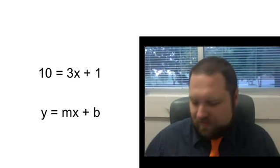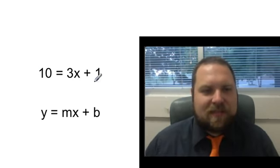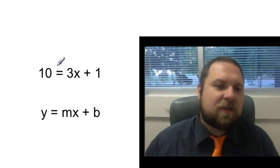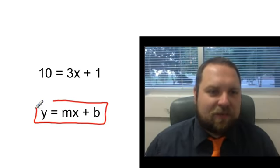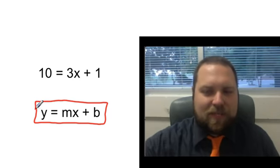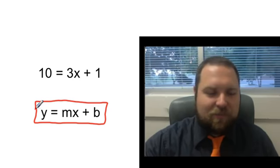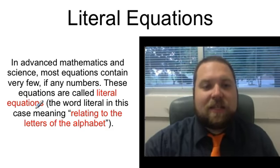Back to our first example here. We see a normal type of equation that we've solved like the whole time we've been doing this work. And then here we see an example of what's called a literal equation. And you've probably been able to tell what the difference is. A literal equation contains very few, if any, numbers.